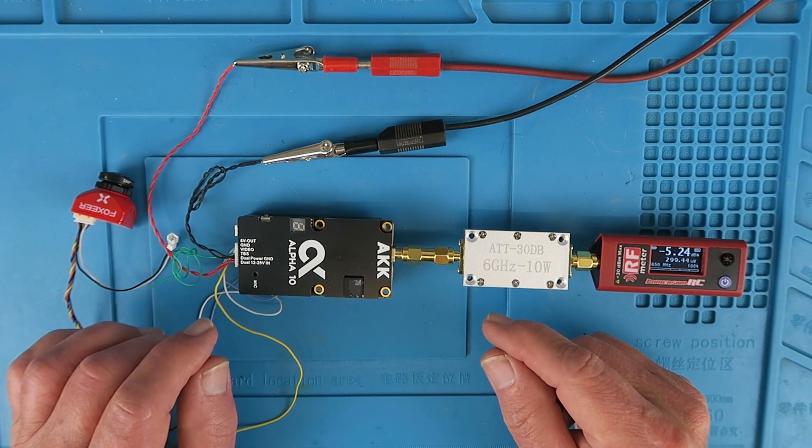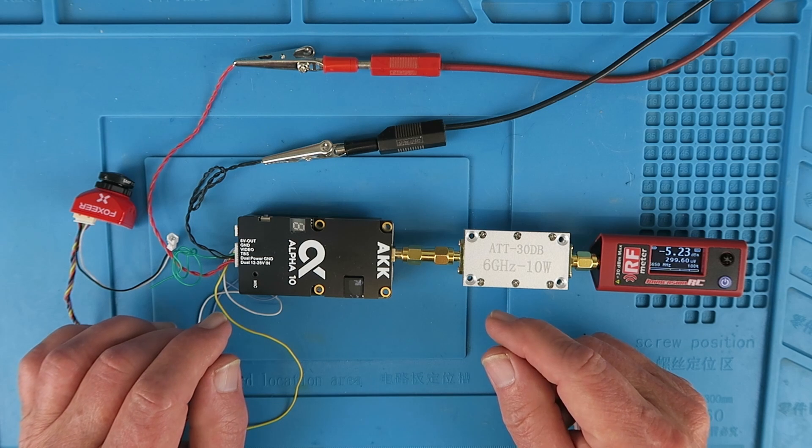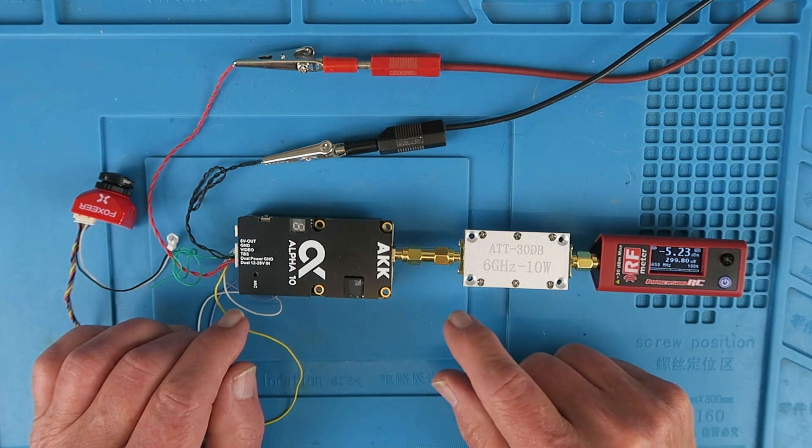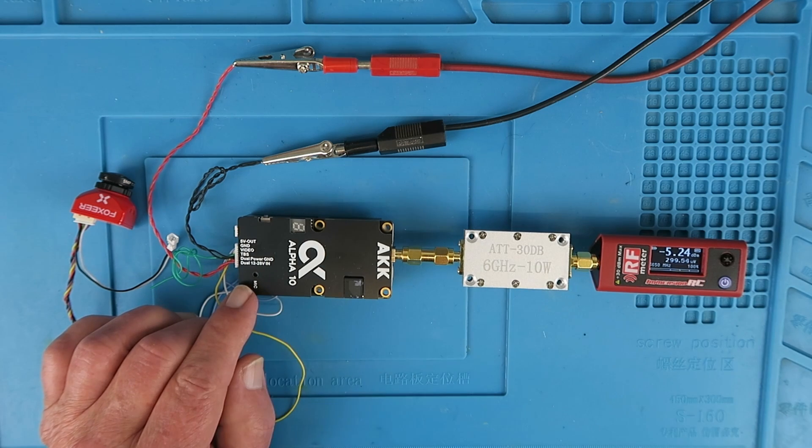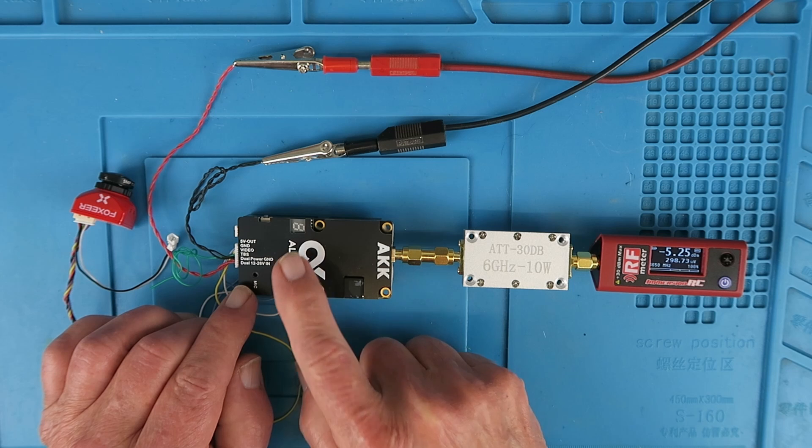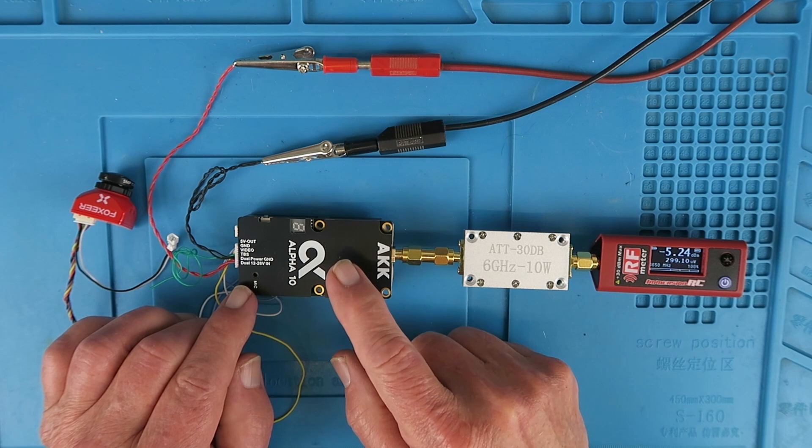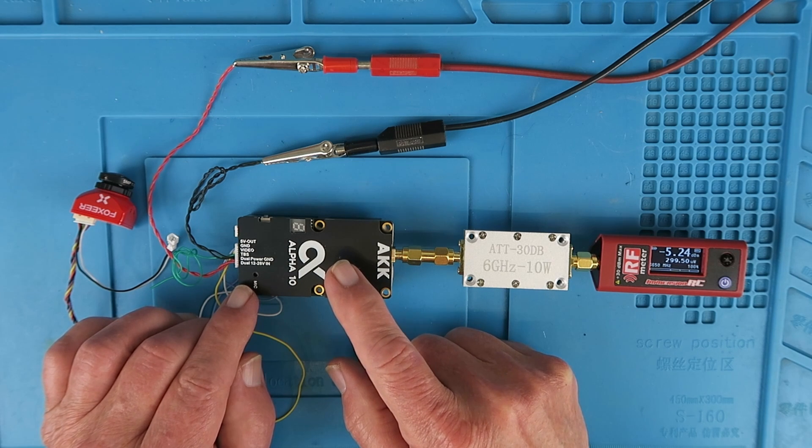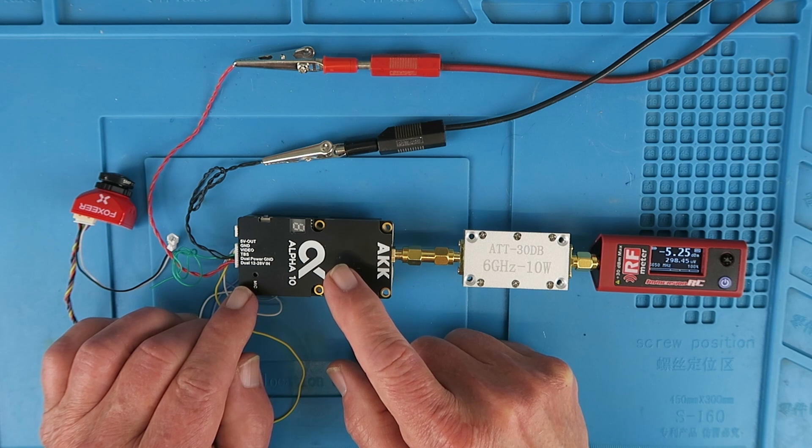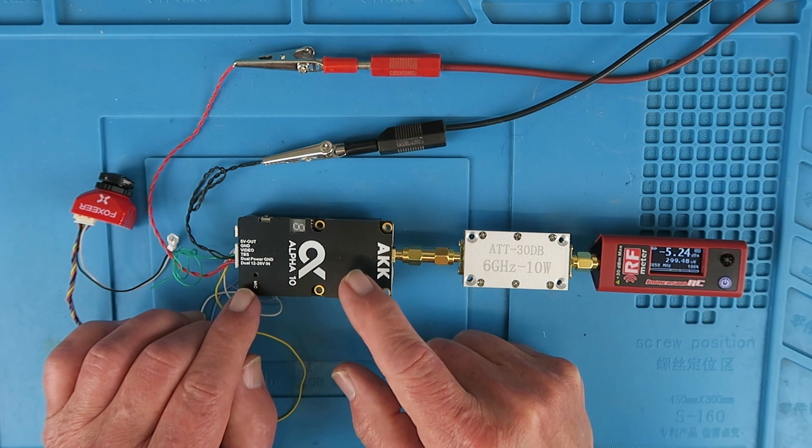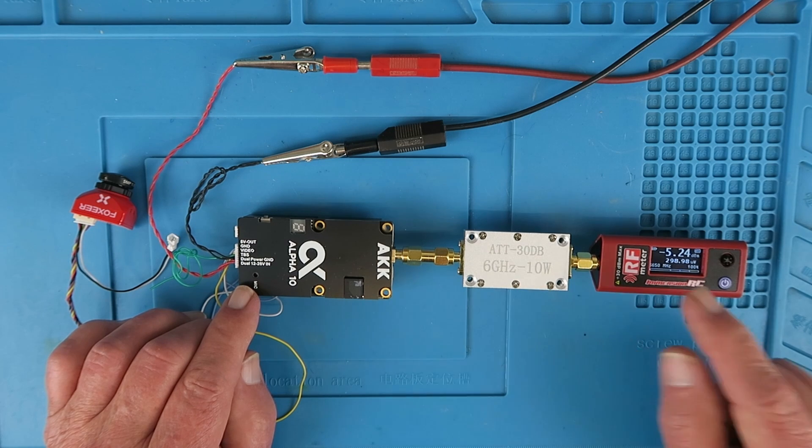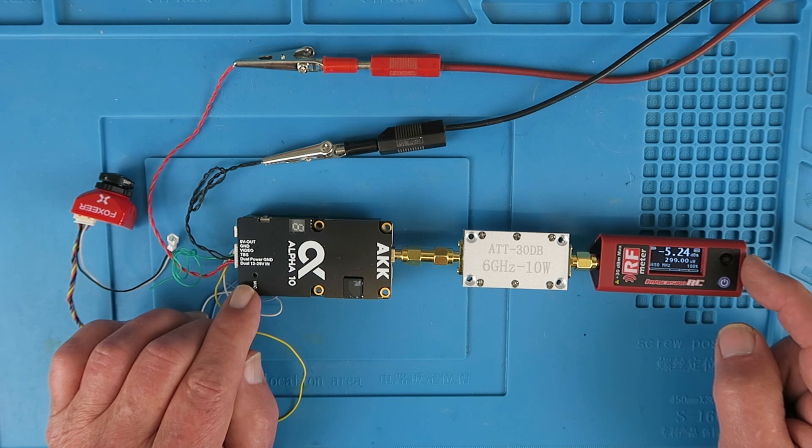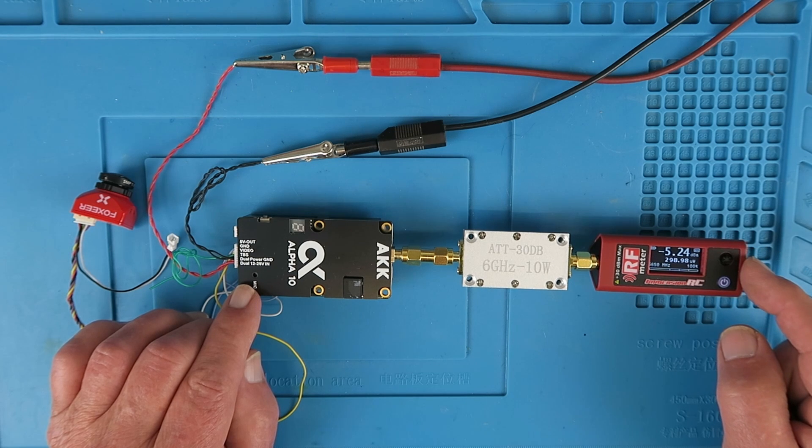I have the same setup as in the original video then. The output of the VTX I've already set to the 10 watts, so we should see the 5 flashing on the display there. So it'll be R1 and 5, indicating band R, channel 1, which is 5658 gigahertz. We have our 30 dB 10 watt attenuator, and I've set the offset for the attenuation to 30 on the little power meter.